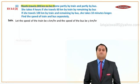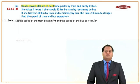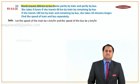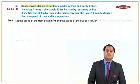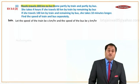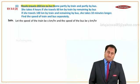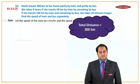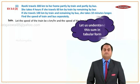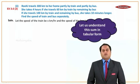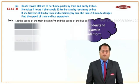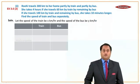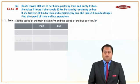Let's go step by step. Ruhi travels 300 kilometers — this is the total distance given to us. Total distance is 300 kilometers. Now let us understand this sum in a tabular form. Note: the table is only for your understanding and should not be part of the presentation in the exam.